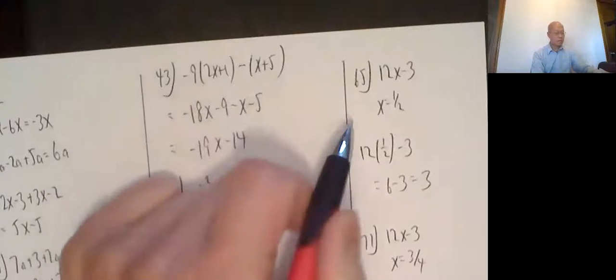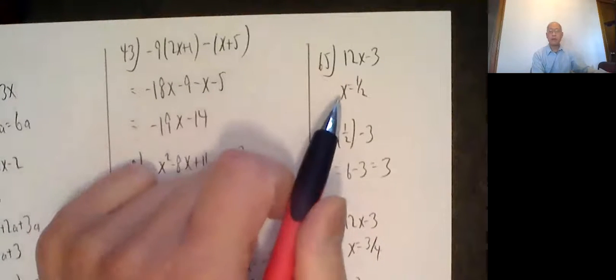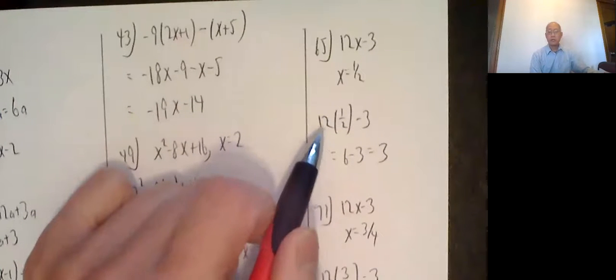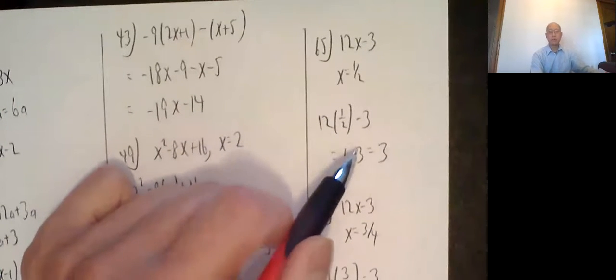Okay, then 65. They give you an expression 12x minus 3. They want you to plug in 1 half. So 12 times 1 half is 6, or you can say half of 12 is 6. 6 minus 3 is 3.